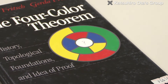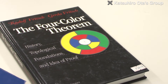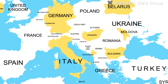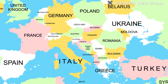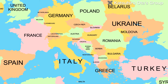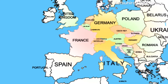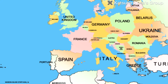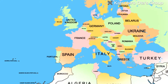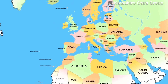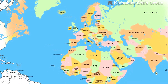A famous example is the Four-Color Theorem. The theorem says that on any planar map, just four colors are enough for any two adjacent areas to have different colors. This problem was tackled by many mathematicians from the late 19th century onward. In 1879, a mistaken proof was presented by Kemp, and for a century after that, no one was able to prove the Four-Color Theorem.